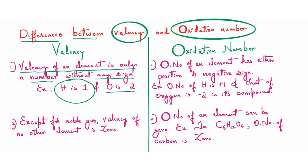With respect to oxidation number, the first difference is that oxidation number of an element has either a positive or a negative sign. For example, oxidation number of hydrogen is always plus one and that of oxygen is always minus two in its compounds. There are exceptions we will learn, but most of the time oxygen will always have an oxidation state of minus two.